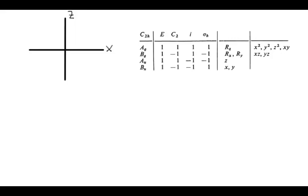In our discussion in class, a lot of you had questions about what do the A and the B mean, and what is the deal with all the functions on the rightmost columns. So in order to help you understand all that, here's a little video to show what those things mean. Here's the C2h point group that we did in our original example.